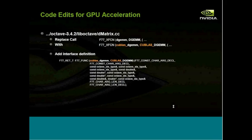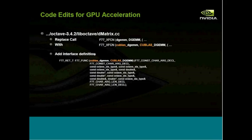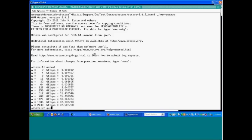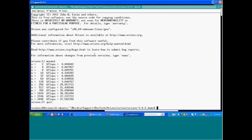Now I'll show you the code edits required to accelerate this application on the GPU. You just search for DGEMM — the double precision matrix-matrix multiplication routine in BLAS — and replace calls to DGEMM with calls to CUBLAS DGEMM. That only happens in one place. We also have to add an interface definition because GNU Octave is written in C and BLAS is traditionally a FORTRAN library, but that's very simple.